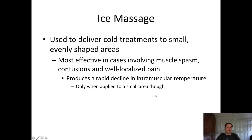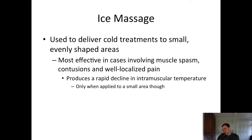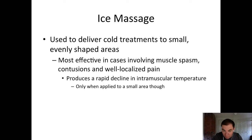Ice massage is used to deliver cold treatment to a small, evenly shaped area and is most effective for muscle spasm, contusion, or well-localized pain. If a patient reports pain in one specific spot — like the biceps — ice massage is a good option. It produces a rapid decline in temperature, but only when applied to a small area. You wouldn't apply ice massage to the entire hamstring or quadriceps.